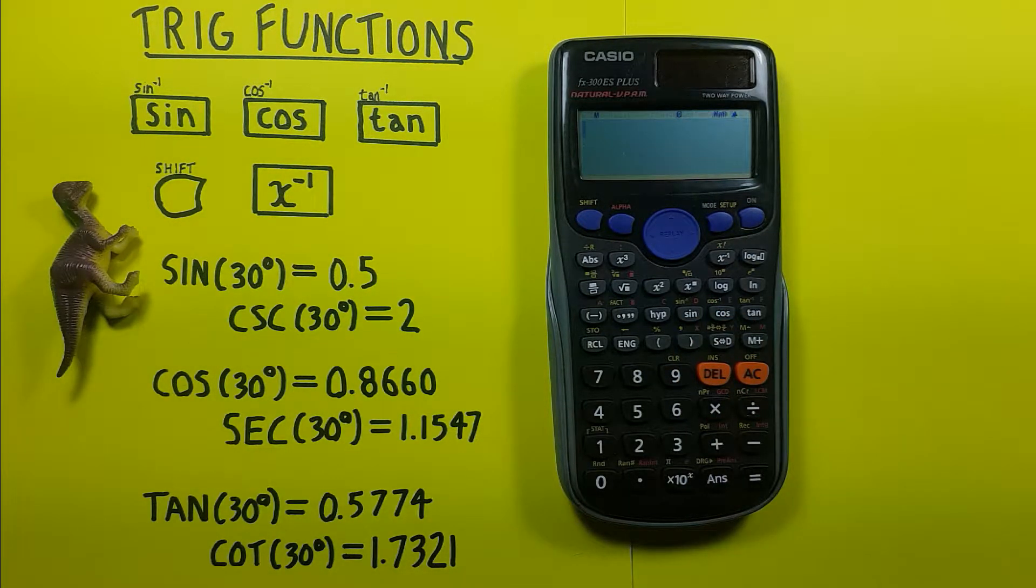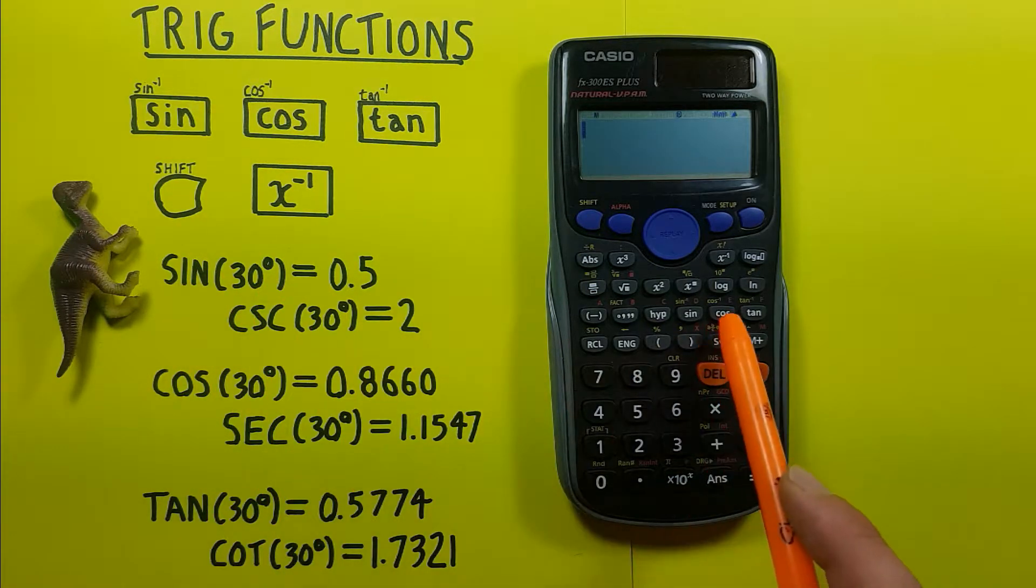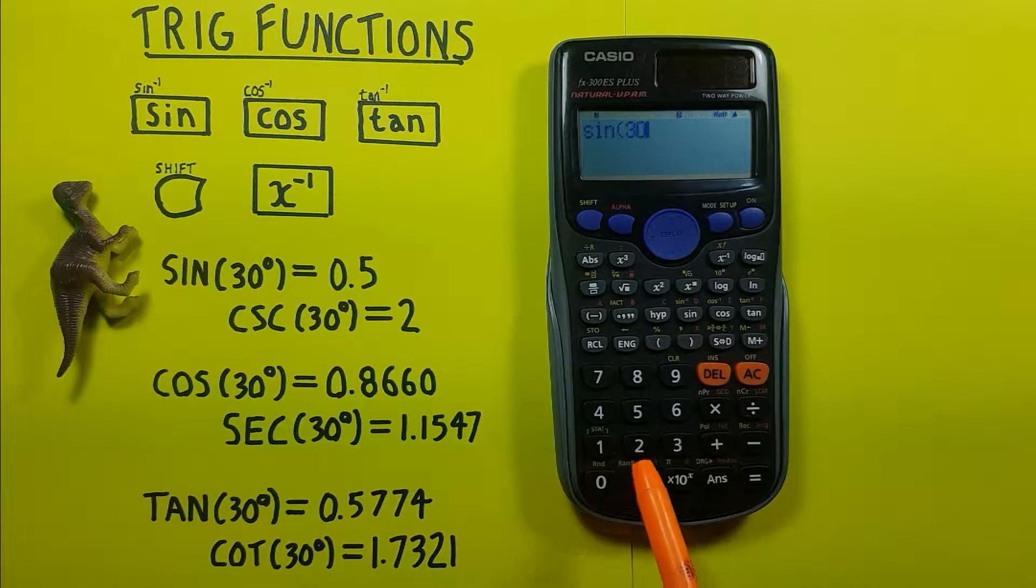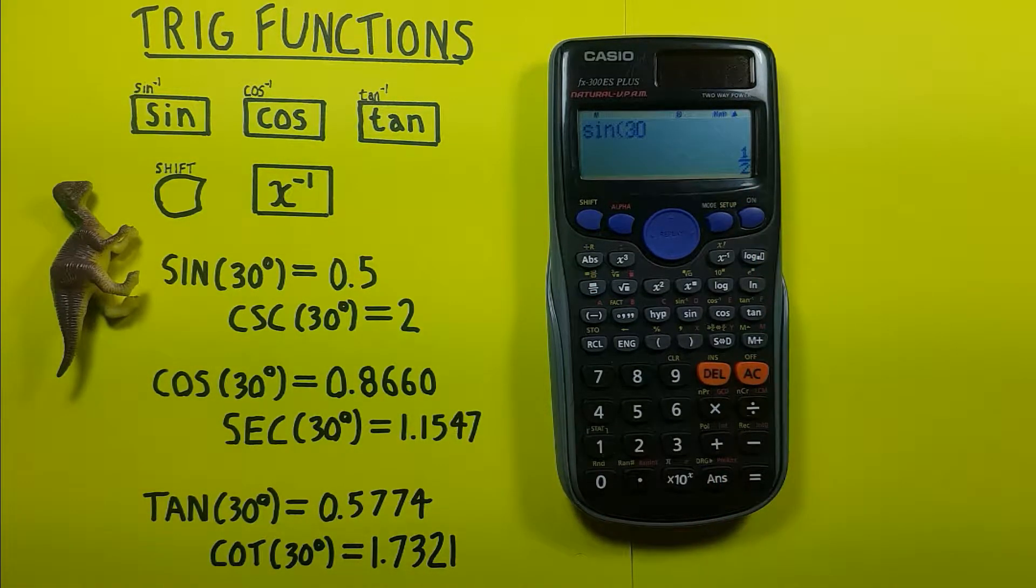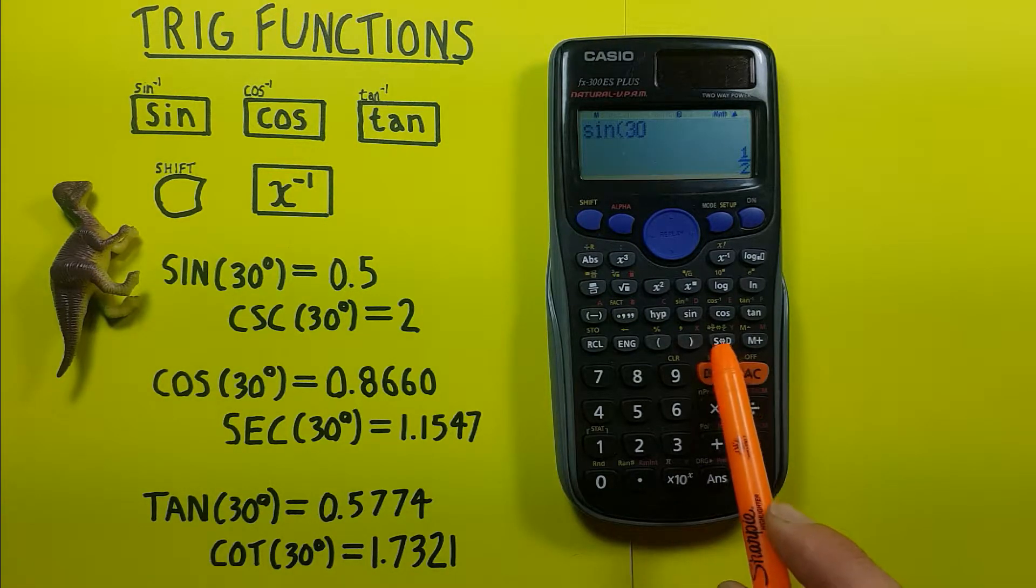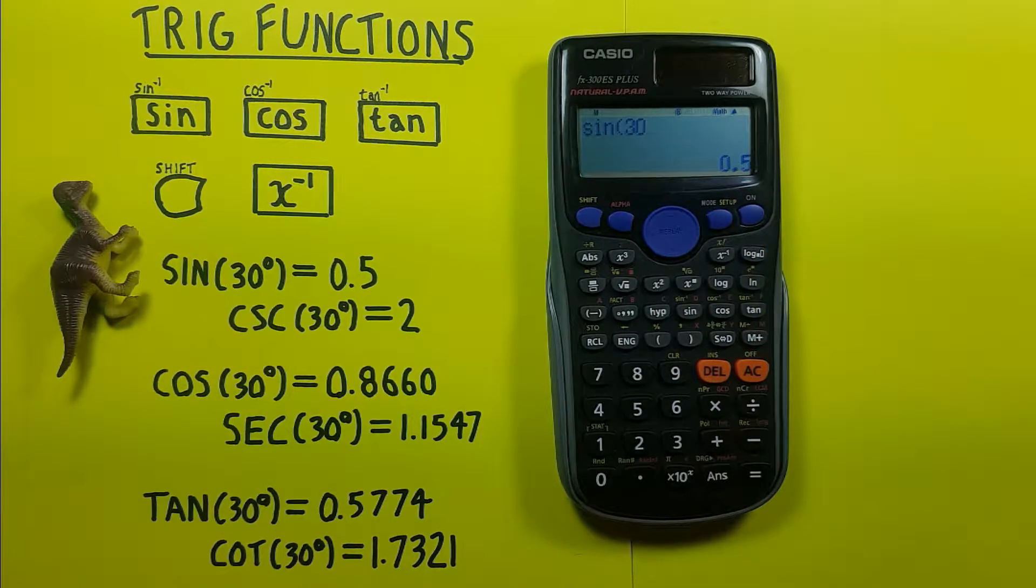Alright, so starting off with the basics. If we want to find the sine of 30 degrees, we press sine, 30, and press equals. We see we get 1 over 2, which we can convert to decimals by pressing this S to D key here. Sine of 30 equals 0.5.